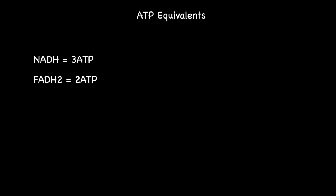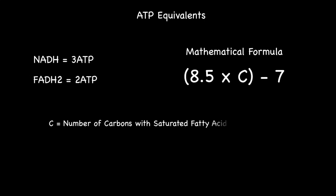If this happens to be what you have been taught then use the following formula: open brackets 8.5 multiplied by C close brackets minus 7. As with the previous formula the letter C represents the number of carbons within the saturated fatty acid.